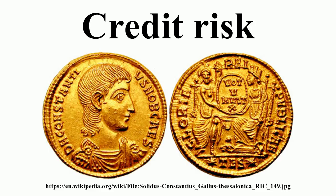Credit risk mainly arises when borrowers are unable to pay due, willingly or unwillingly. Types of credit risk: Credit default risk is the risk of loss arising from a debtor being unlikely to pay its loan obligations in full, or the debtor is more than 90 days past due on any material credit obligation. Default risk may impact all credit-sensitive transactions including loans, securities and derivatives. Concentration risk is the risk associated with any single exposure or group of exposures with the potential to produce large enough losses to threaten a bank's core operations.